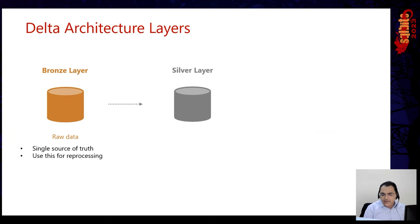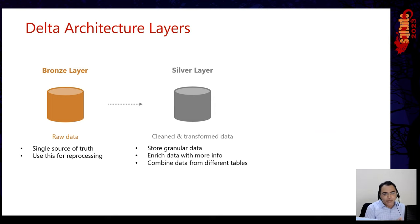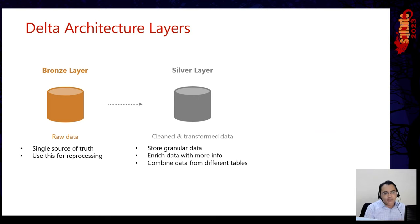Once we have the bronze layer, we take that raw data and process it in the silver layer. We clean and transform the data — if you're getting customer data from multiple sources, you standardize it, combine it, remove duplicates, remove null values, and address data quality issues before putting it into the silver layer. Compare this with the enterprise data warehouse layer where you can put all the data.